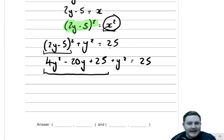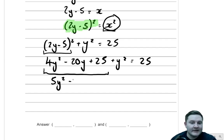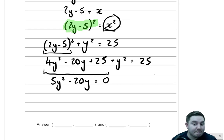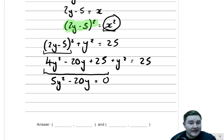We get a little cancellation: we've got 4y squared plus another y squared, giving 5y squared take away 20y. Then we've got plus 25 on both sides, so we can take 25 away from both sides, leaving 5y squared take away 20y equals 0.